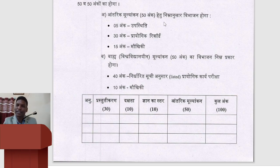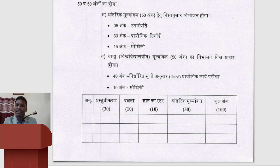Yahan tak clear — 100 number theory ka siddhantik paper ke liye university dwara, aur 100 number aapke practical ke liye. Internal assessment hoga 50 number ka. Total 100 number ke practical mein jo 50 number ka internal practical hoga, woh is prakar divide kiye gaye hain: 5 marks vidyarthiyon ke attendance ke upar diye jaenge — 75% upasthiti se zyada rakhna hoga. Aur jo 30 ank hain, aapke prayogik ka record ke liye — jo aap record taiyar karenge — uske liye 30 ank, aur 15 marks presentation ke liye.